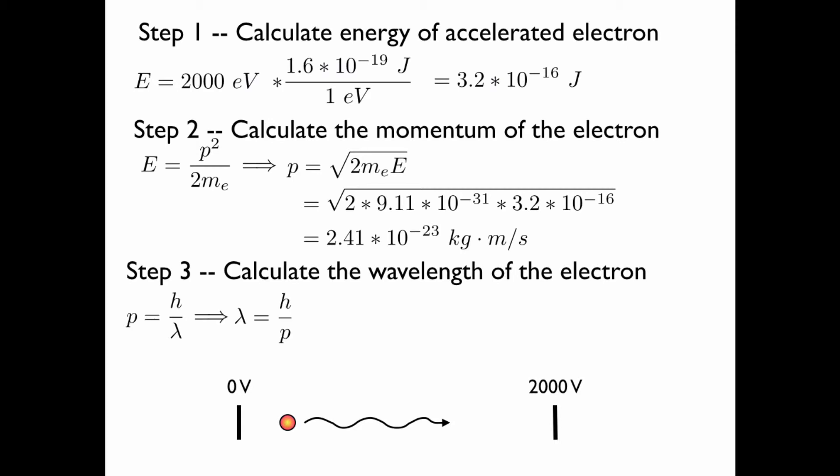So we can solve for the wavelength λ and plug in Planck's constant and the momentum which we just found. This gives us our wavelength for the electron: 2.75 × 10⁻¹¹ meters.